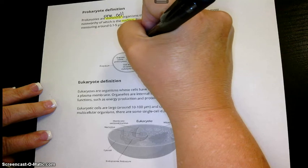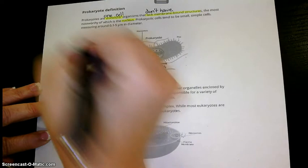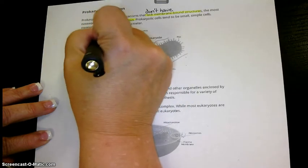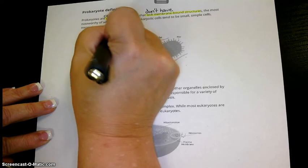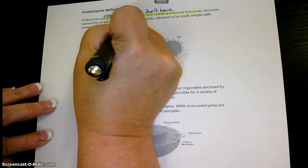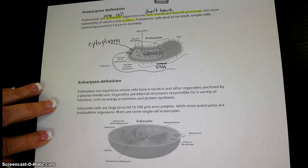This gray area, just kind of draw a line out here, is the cytoplasm. All organisms, cells, every kind of cell, has cytoplasm, or the gel that is inside of the cell.